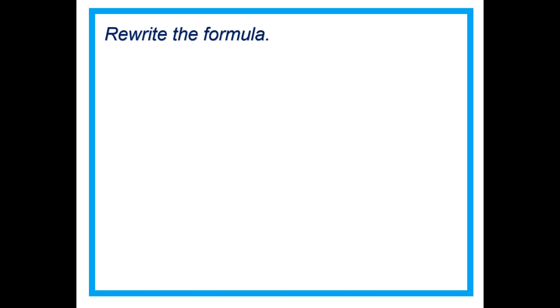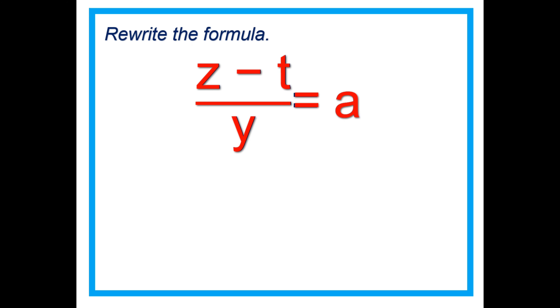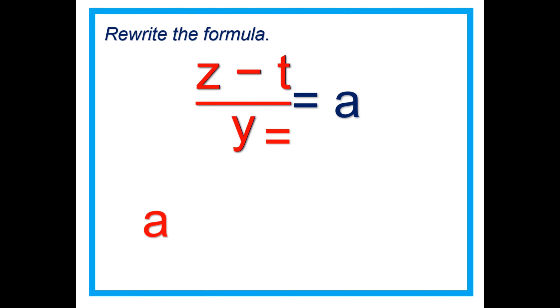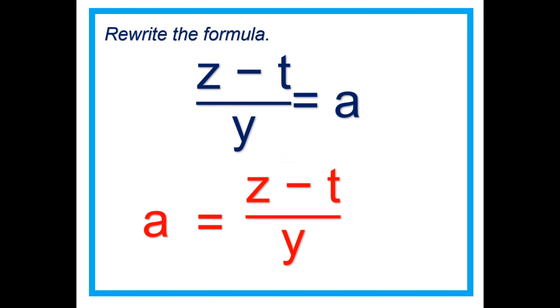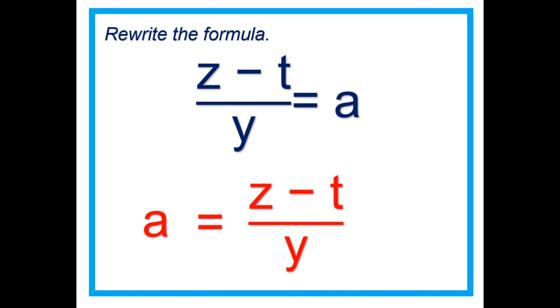Let's rewrite the formula. Just like this: bring down the A, the equal sign, and Z minus T divided by Y. That's it.